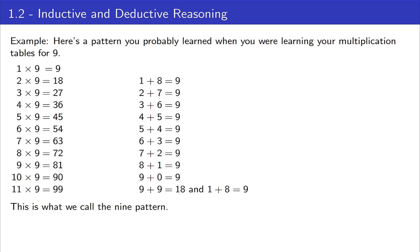Let's look at some of the products involving 9. 1 times 9 is 9. 2 times 9 is 18, but if you add up the digits, 1 plus 8 is 9. 3 times 9 is 27, and if you add up the digits, 2 plus 7 is 9. As you look through all the multiples of 9, you'll notice that as you keep going, you keep adding up the digits of that answer and you get 9.